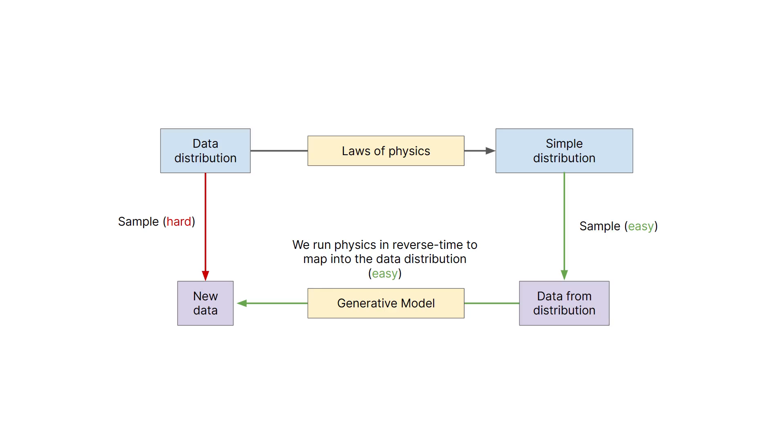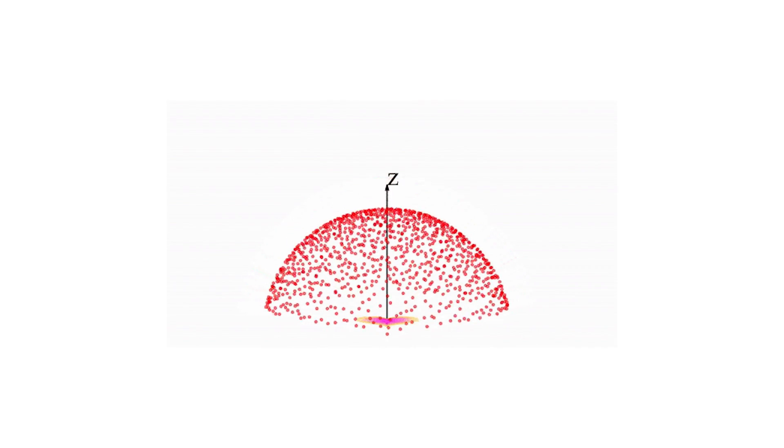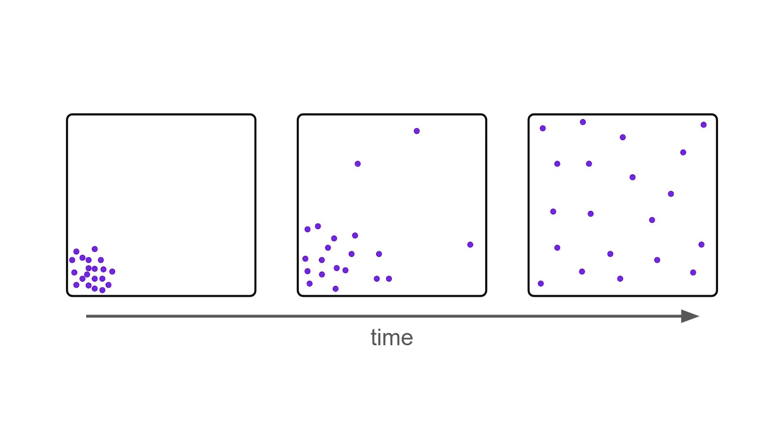First, we'll give a general overview of how physics-inspired AI models work. Then we'll take a look at two specific cases. The first uses the field of electrostatics, where treating data points as electrons helps us generate novel images. The second uses the field of thermodynamics, where treating data points as if they were atoms in a gas similarly helps us create images. So let's start off with some general concepts.